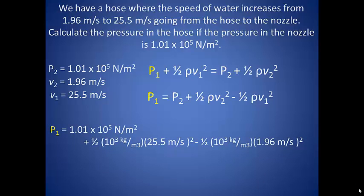If you wanted, you could do a little bit more algebra and factor out the one half as well as the density from those expressions. And here I just plug them in. Either way, you end up with a pressure in the nozzle of 4.24 times 10 to the fifth newtons per meter squared, which is quite a bit more than the pressure in the hose. Again, this does fall in with what we expect since the velocity in the nozzle is more than the velocity in the hose.